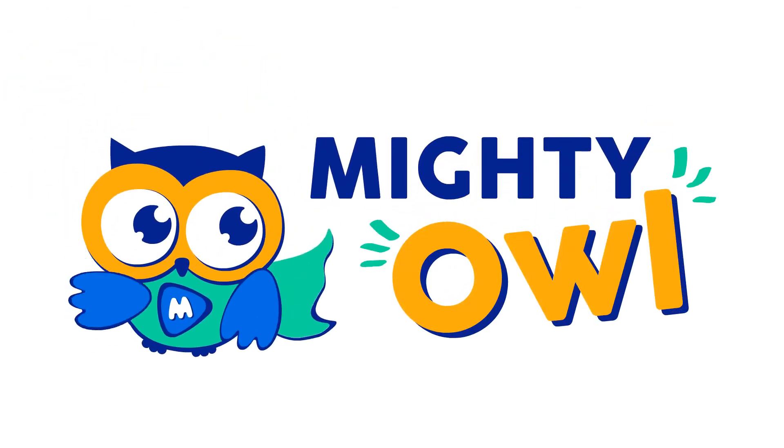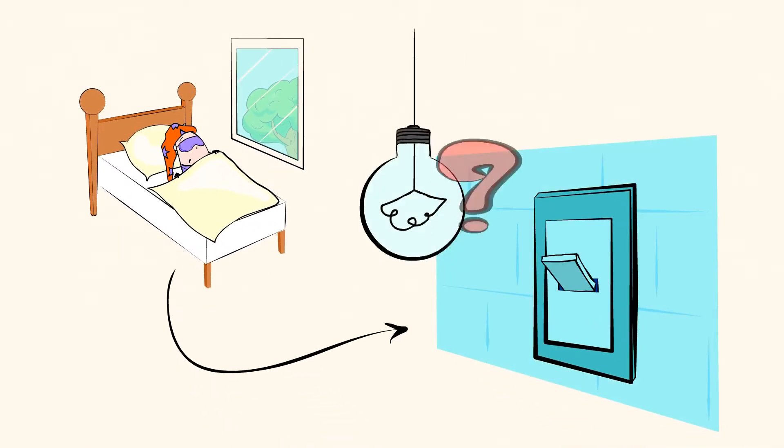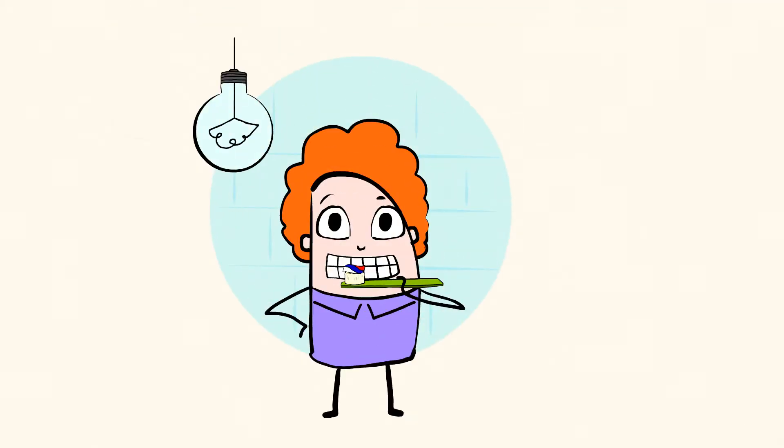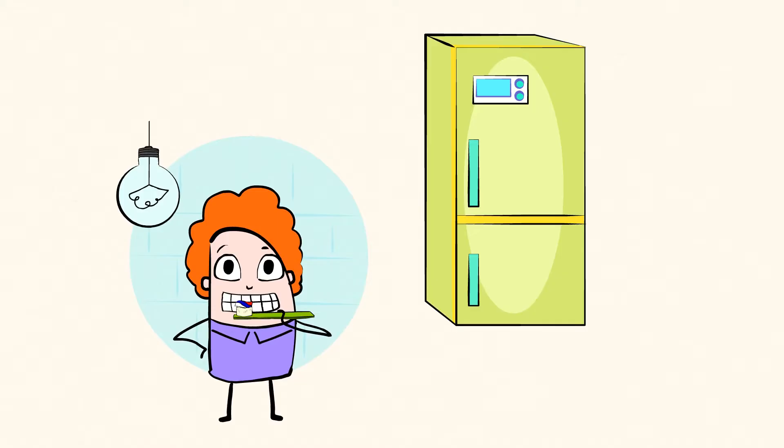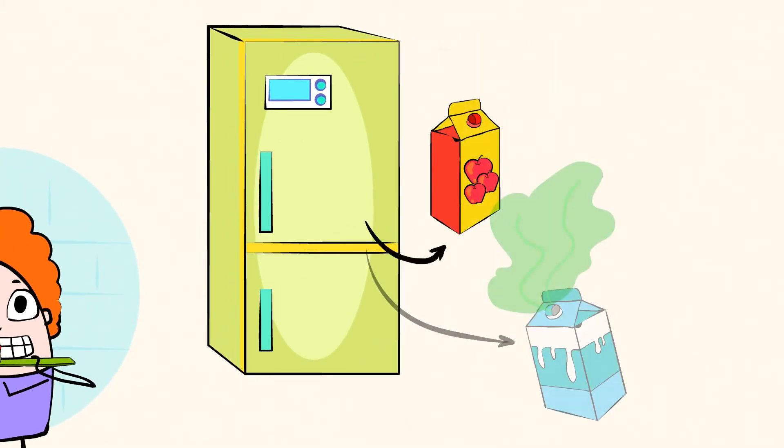Hello, this is Mighty Owl. You wake up one morning, you go to the bathroom and turn on the light. Nothing happens. No power. You manage to go through your morning routine, you go to the kitchen, open the refrigerator, but your favorite juice is warm and the milk has gone bad. Yikes!